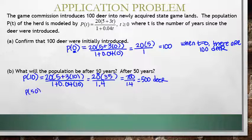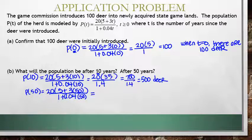Solving for P(50), we get 20 times 5 plus 3 times 50, all divided by 1 plus 0.04 times 50, which gives us 300 all over 3, which is about 1033 deer.